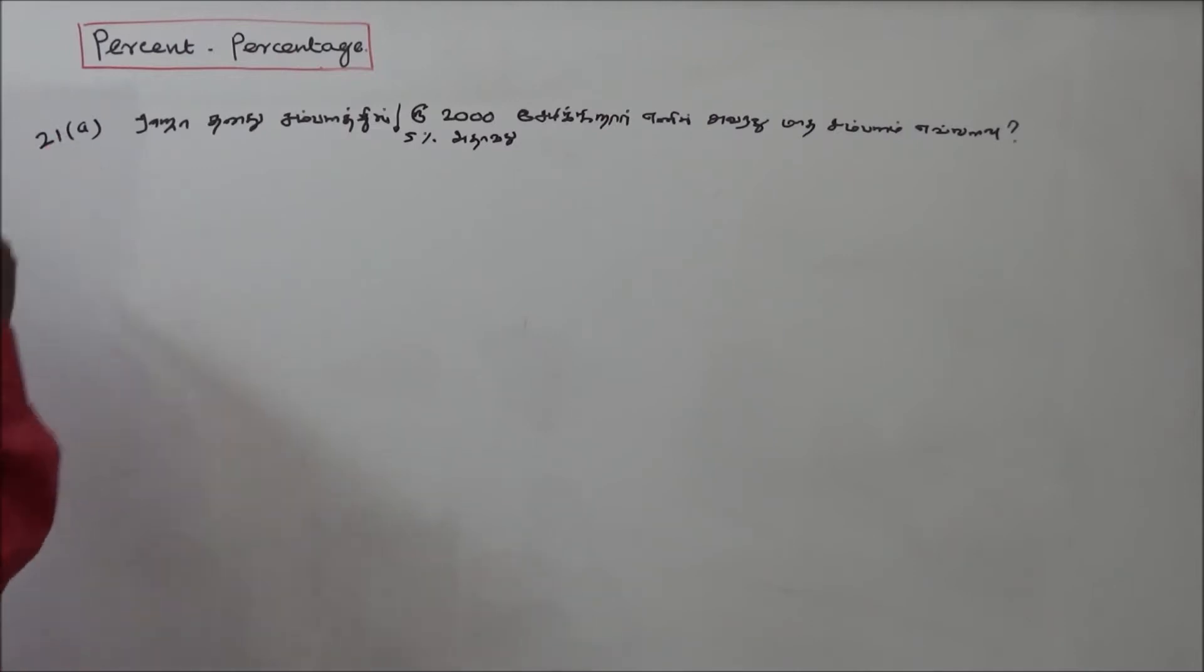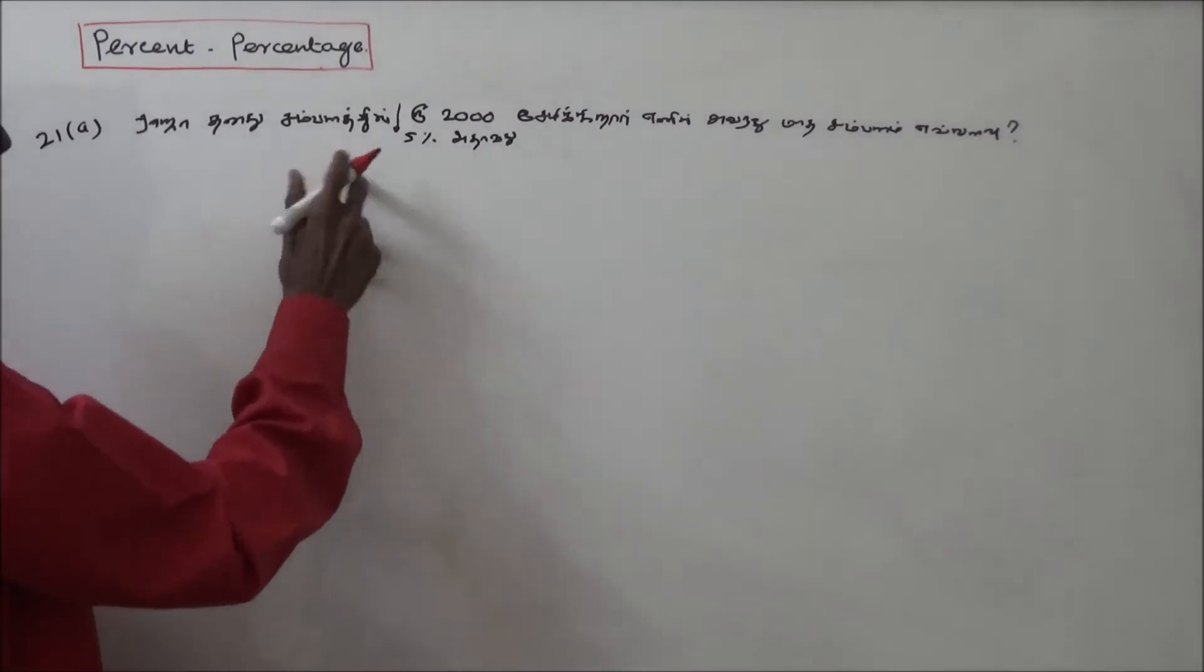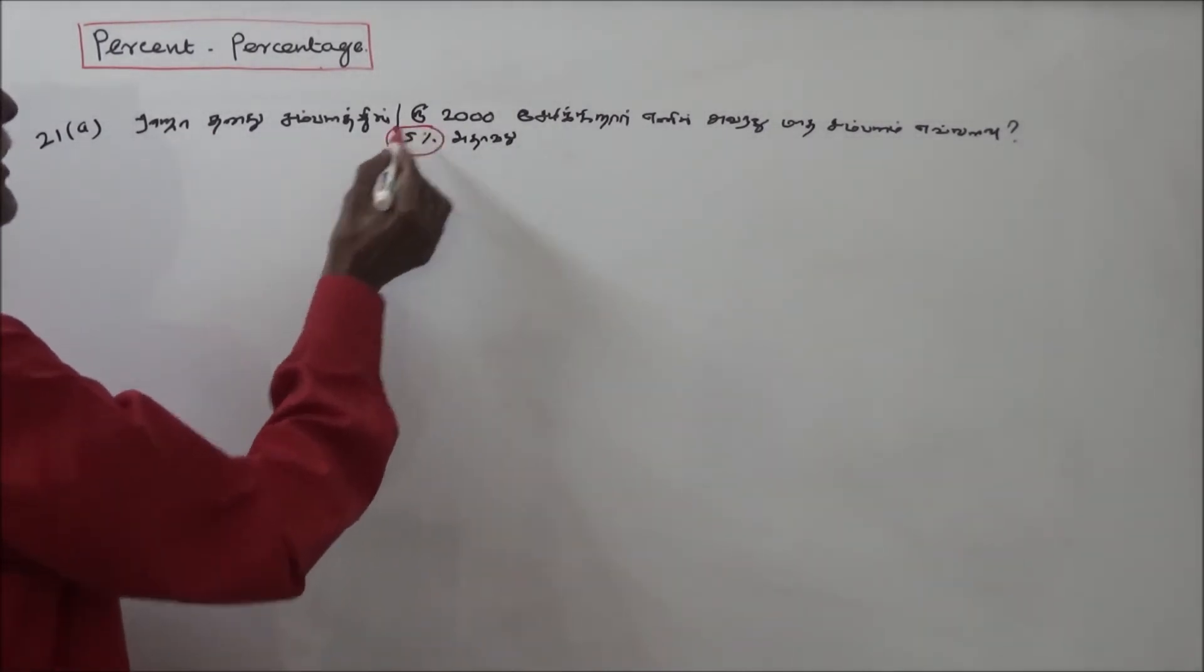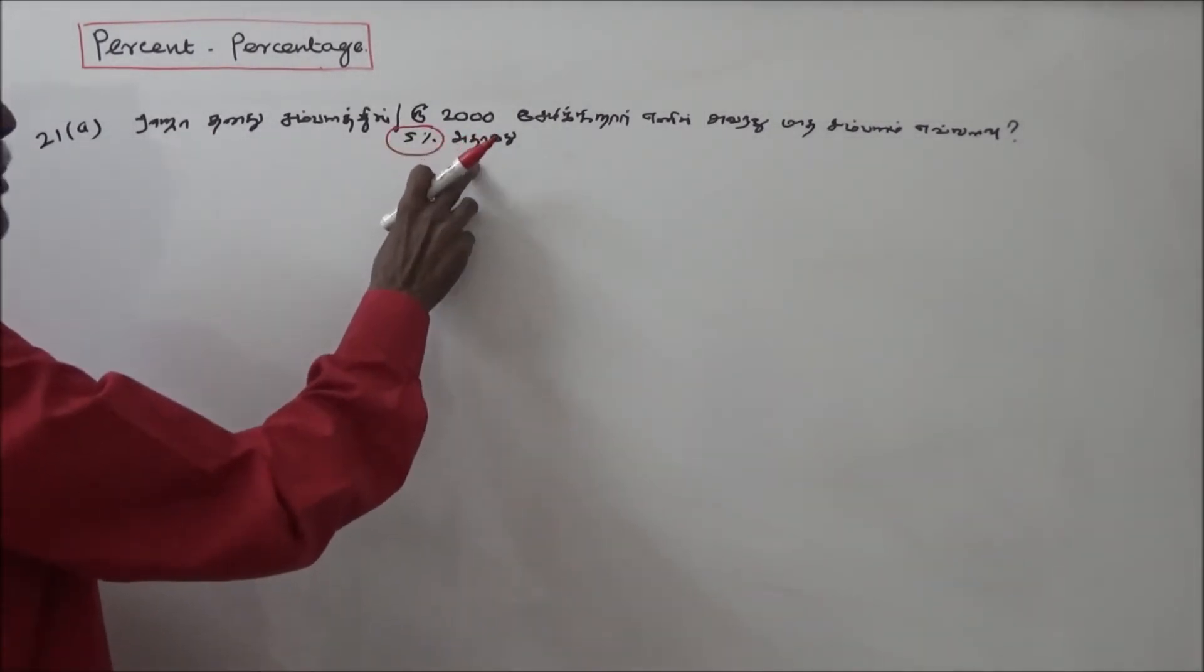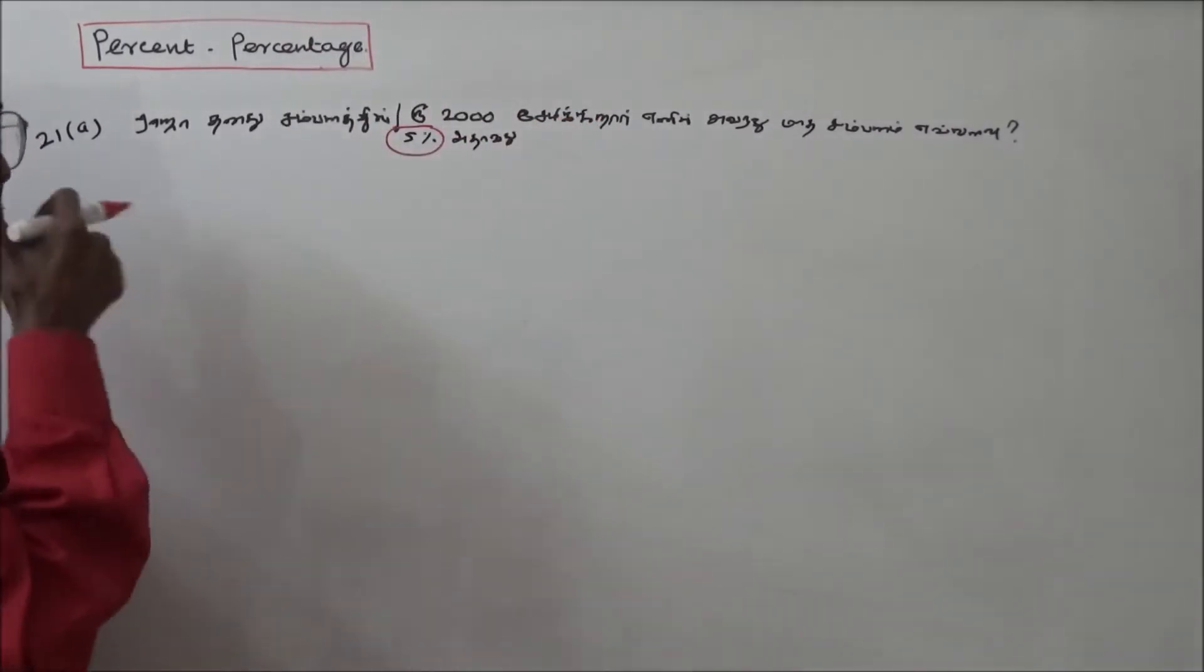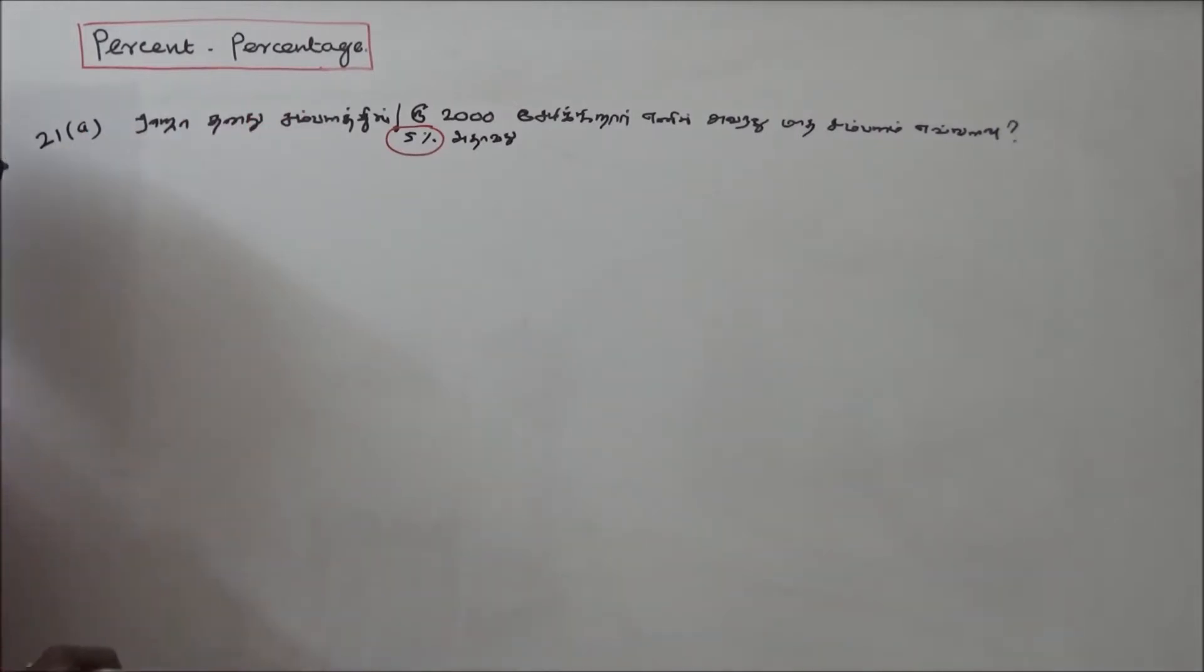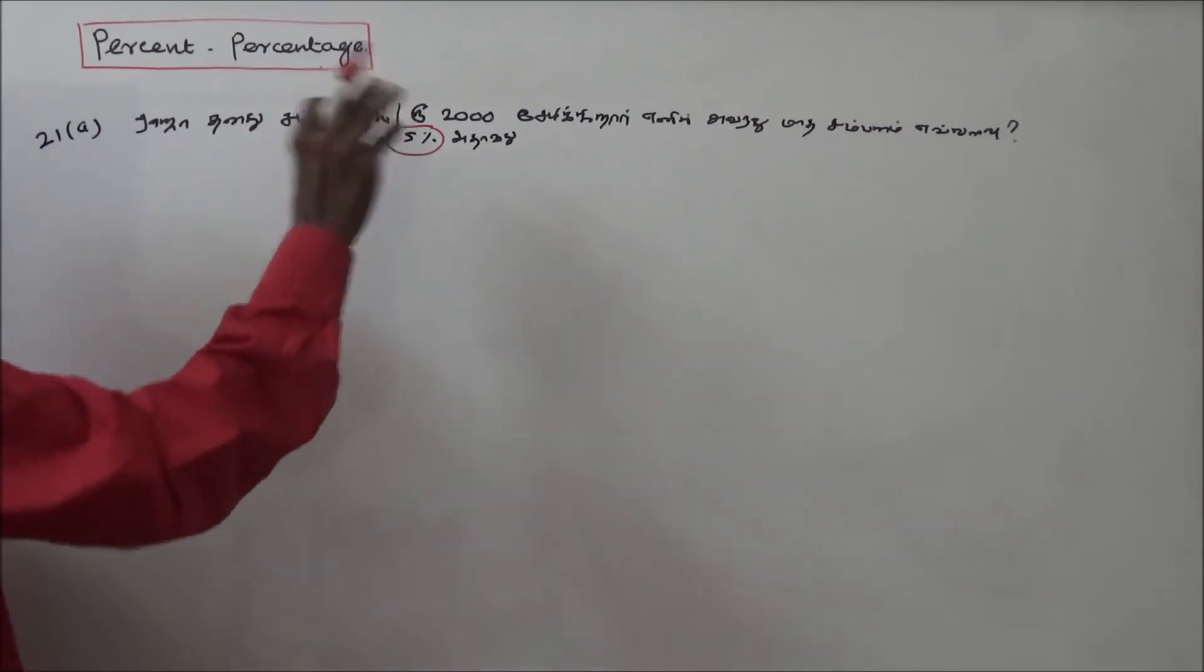Problem number 21a: Rajah saves 5 percentage of his salary, which is 2,000 rupees. What is the total salary? 5 percentage is 2,000 rupees, so we need to find the total salary.